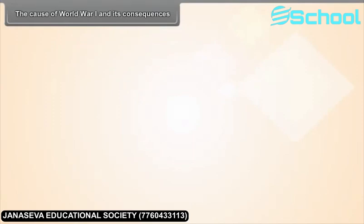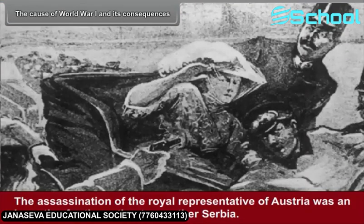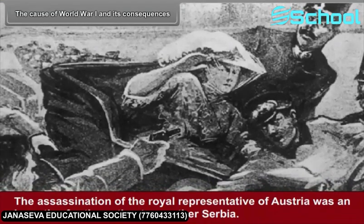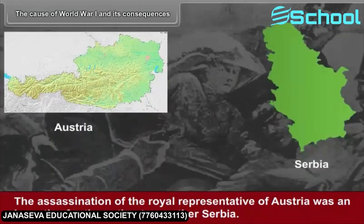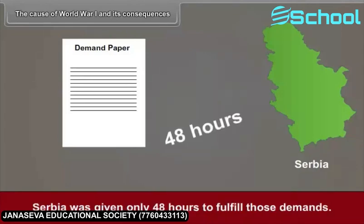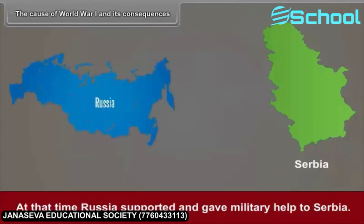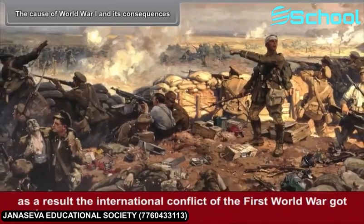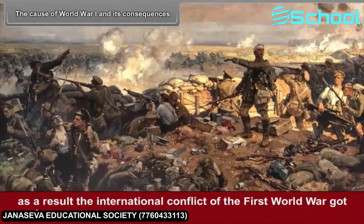The cause of World War I and its consequences: The assassination of the royal representative of Austria was an incentive for the nation to smother Serbia. Austria imposed unacceptable demands on Serbia. Serbia was given only 48 hours to fulfill those demands. At the time, Russia supported and gave military help to Serbia. After getting support from Russia, Serbia denied the demands of Austria. As a result, the international conflict of the First World War got underway.